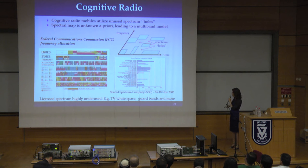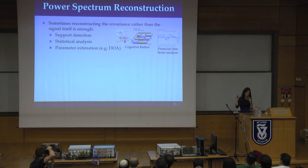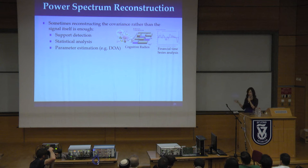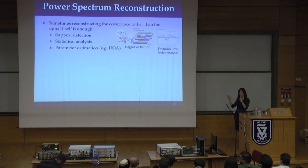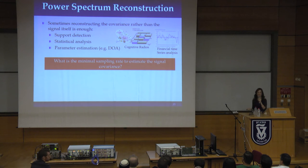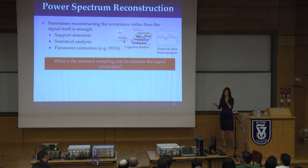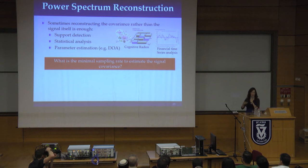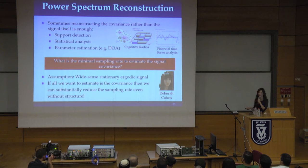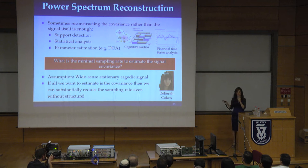If we could identify these white spaces over a very wide spectrum, we could allow secondary users to use the channel, increasing capacity and revenue for cellular companies. This becomes a wideband sensing problem — we have a very wideband signal and must monitor it continuously to locate white spaces. Interestingly, in cognitive radio we don't have to recover the signal; we only need to know where it's located — it's enough to recover the signal power spectrum. This raises the fundamental question: what is the minimal rate needed to recover signal statistics?